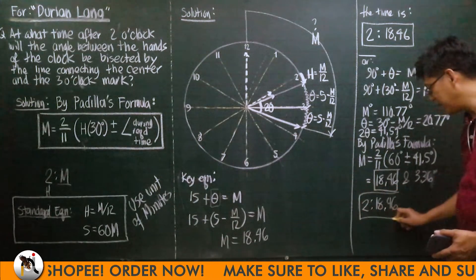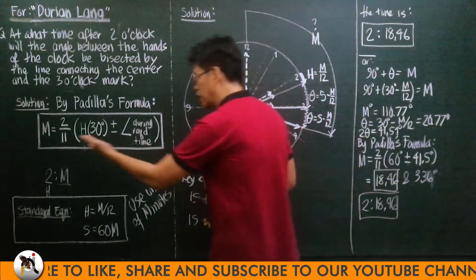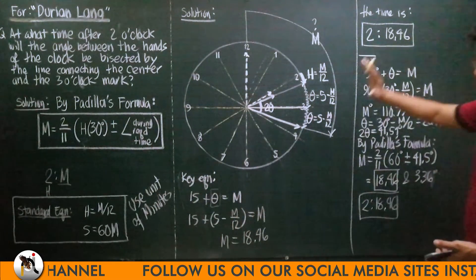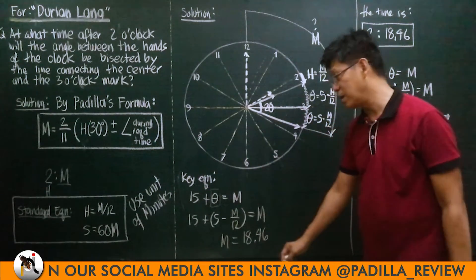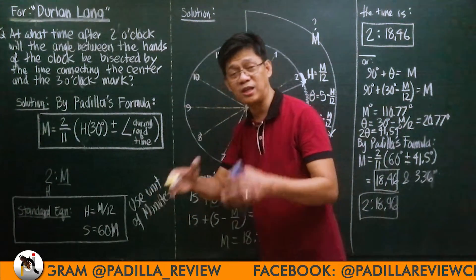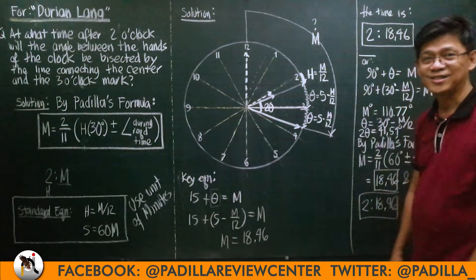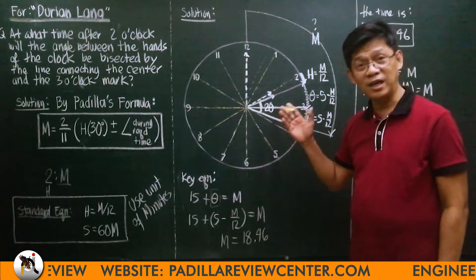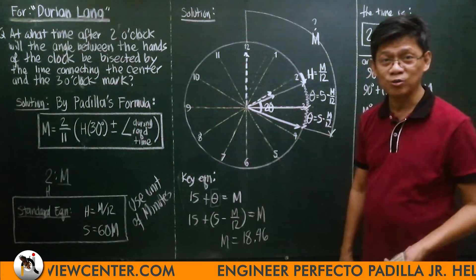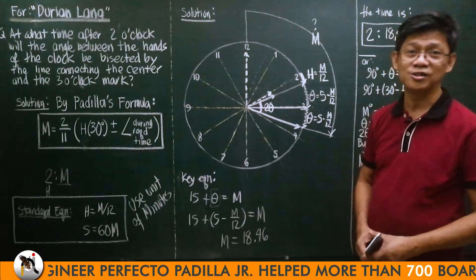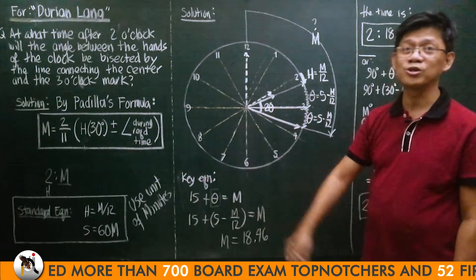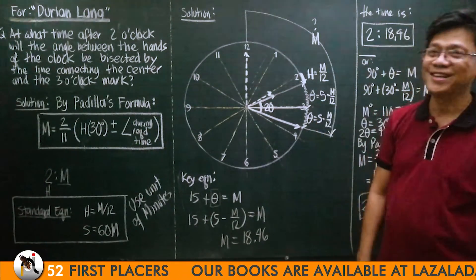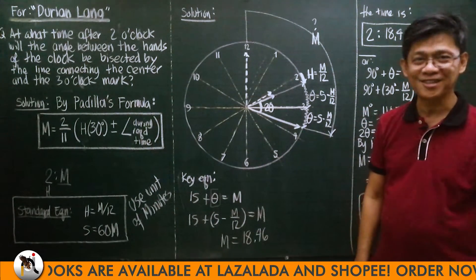That is the reason why I don't recommend Padilla's formula when there are two unknowns in the equation — because in solving the other unknown, you will still use the conventional formula anyway. When using the conventional formula, I recommend using units of minutes so the answer is directly in minutes. If you have any questions, don't hesitate to send them via the comment section and I'll try to make a video answering your question. Mr. Dorian Lang, I have finally made this video to address your question. See you.